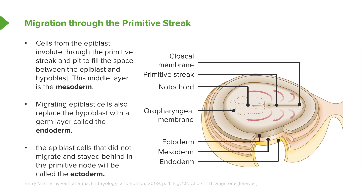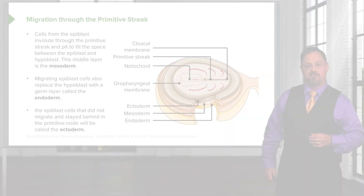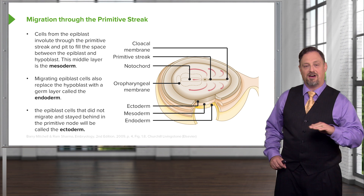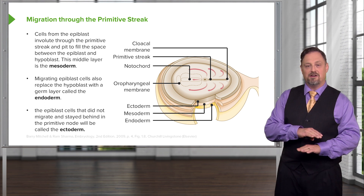As cells continue to involute through the primitive streak and move cranially along that space, they will utterly replace the hypoblast cells with a brand new layer called endoderm. The epiblast cells that did not migrate are then called the ectoderm. When gastrulation completes, we have ectoderm on the top or dorsal surface, mesoderm in the middle, and endoderm lining the underside.